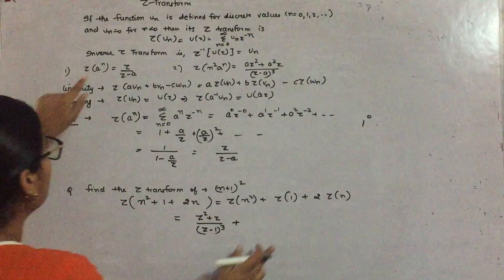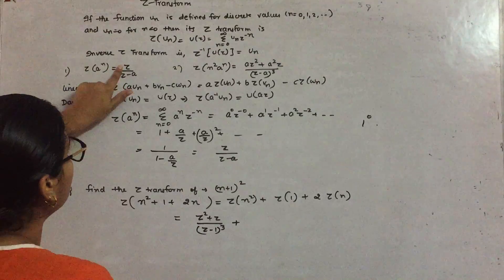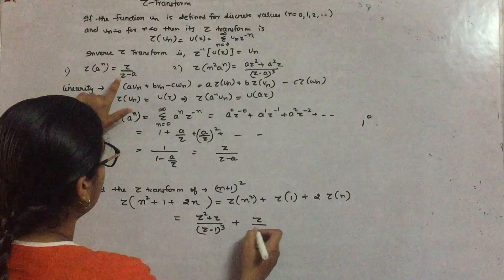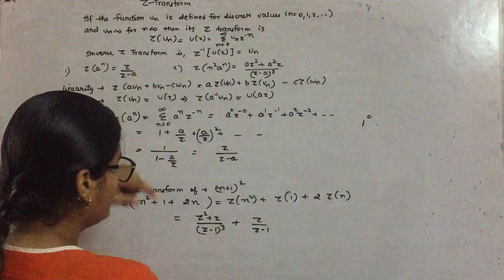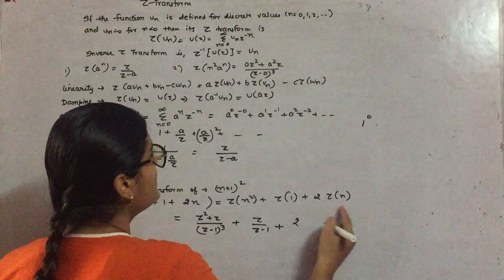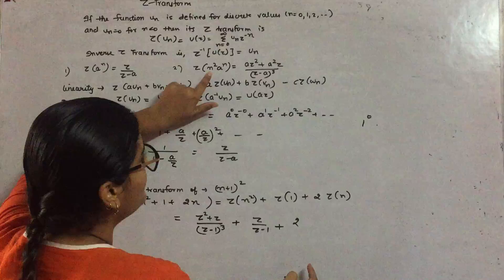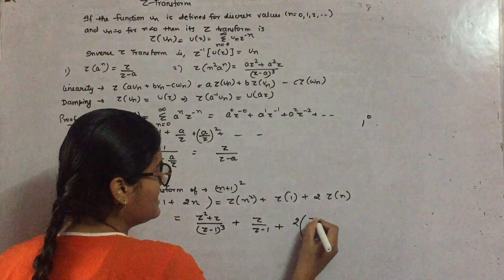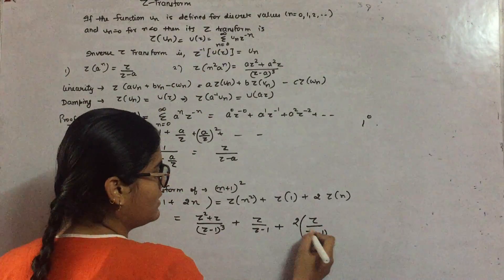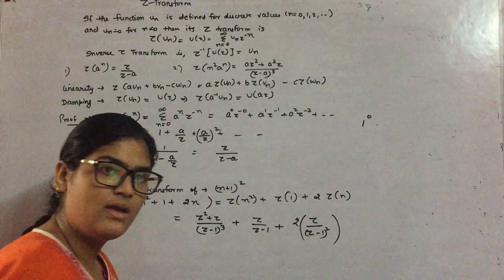Z transform of 1 is Z/(Z-1), and twice of Z transform of n becomes 2Z/(Z-1)^2. So this is how you can solve using the linearity property.